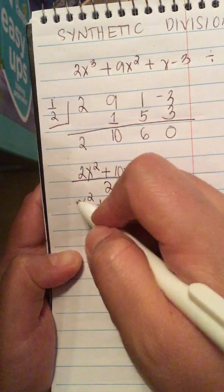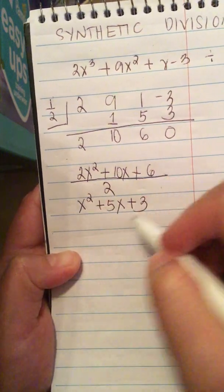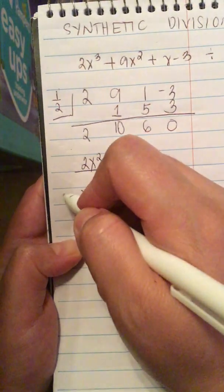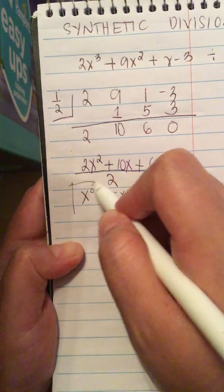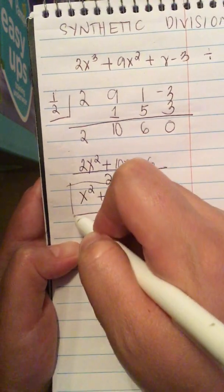So this is now the reduced polynomial. Good stuff. So we have another one.